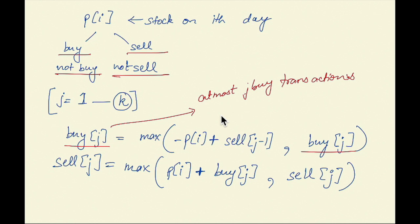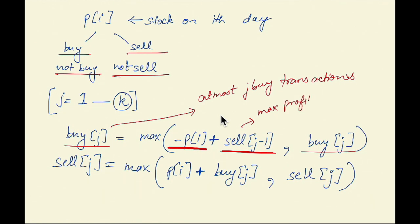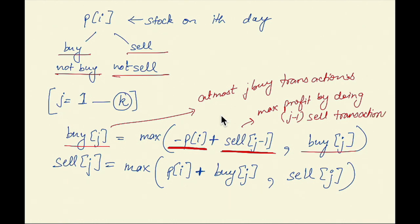If we decide to do the Jth transaction on day I, then we will be at a loss of p[i] since we are buying for the Jth time on day I, but we will gain the profit of sell[J-1], which means we get the maximum profit by doing at most J minus one sell transactions.